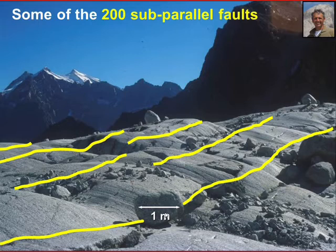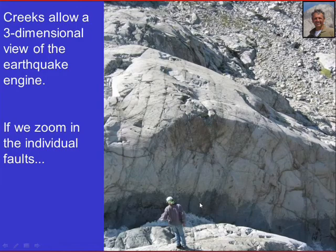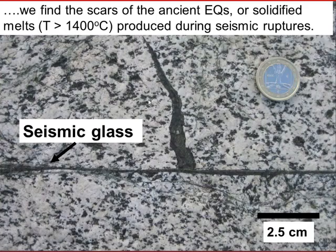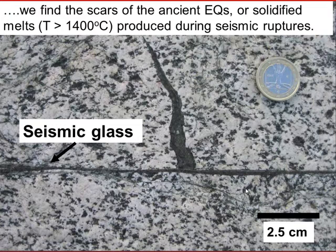We can zoom in and appreciate the polished outcrops. These tiny lines are the individual faults building up the fault zone, with a block for scale of about one meter. Because of the presence of creeks, you can also see faults in three dimensions. Zooming in on individual faults, we find the scars of these earthquakes — about 30 million years old. This is seismic glass that geologists call pseudotachylite — solidified melts whose temperature was probably between 1,400 and 1,500 degrees Celsius when produced during seismic rupture. You can see next to the pseudotachylite the tonalite, made of biotite, with whitish feldspar and some glassy quartz.